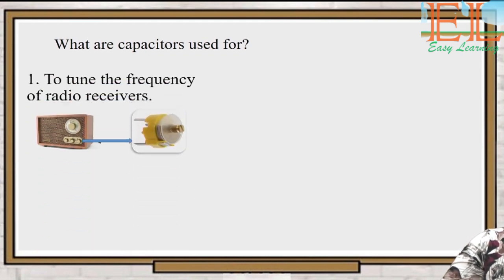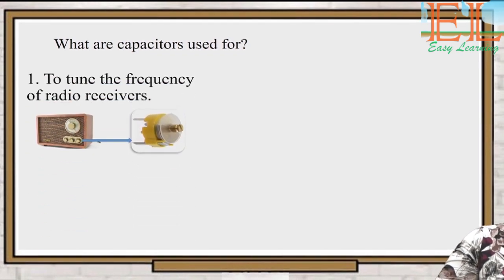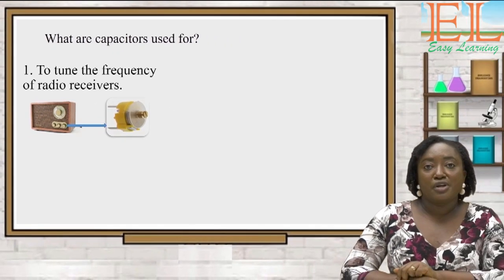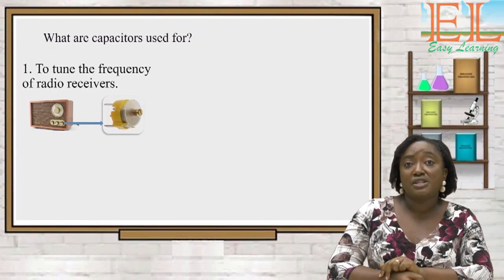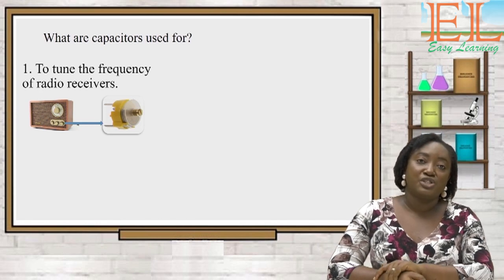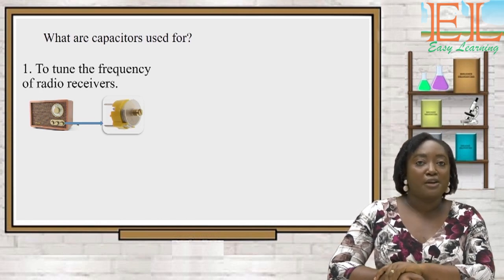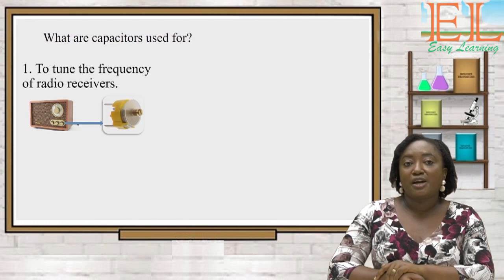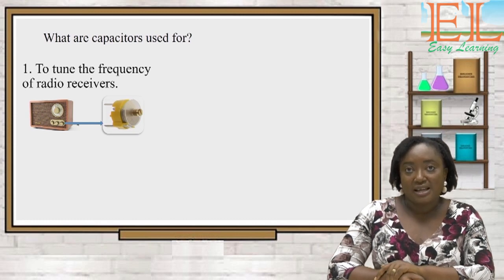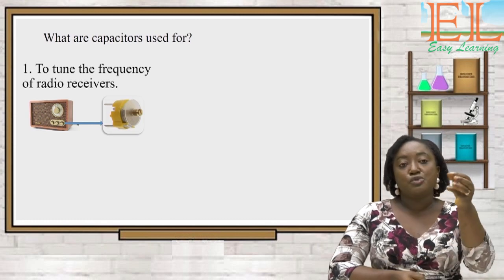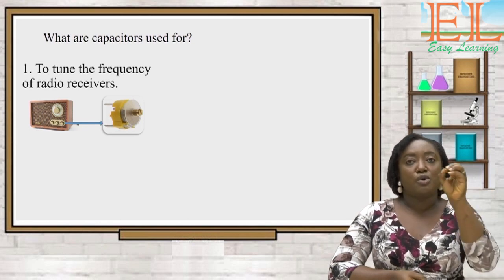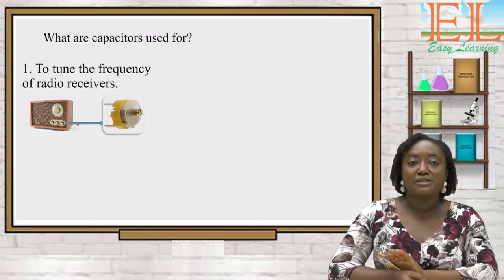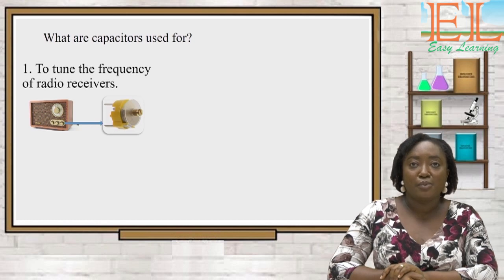What are capacitors used for? Capacitors are used to tune the frequencies of radio sets. For instance, if you are listening to news on Joy FM and want to change to Adom FM to hear the news in the local dialect, it is with the help of the capacitor that you tune your radio from Joy FM to Adom FM — made possible with the variable capacitor.